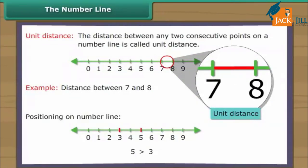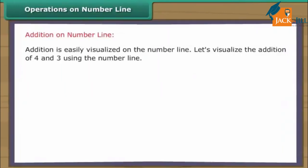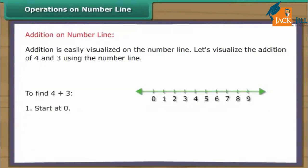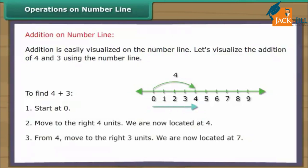Operations on number line. Addition is easily visualized on the number line. Let's visualize the addition of four and three. To find four plus three: one, start at zero. Two, move to the right four units. We are now located at four. Three, from four, move to the right three units. We are now located at seven. Thus, four plus three equals seven.